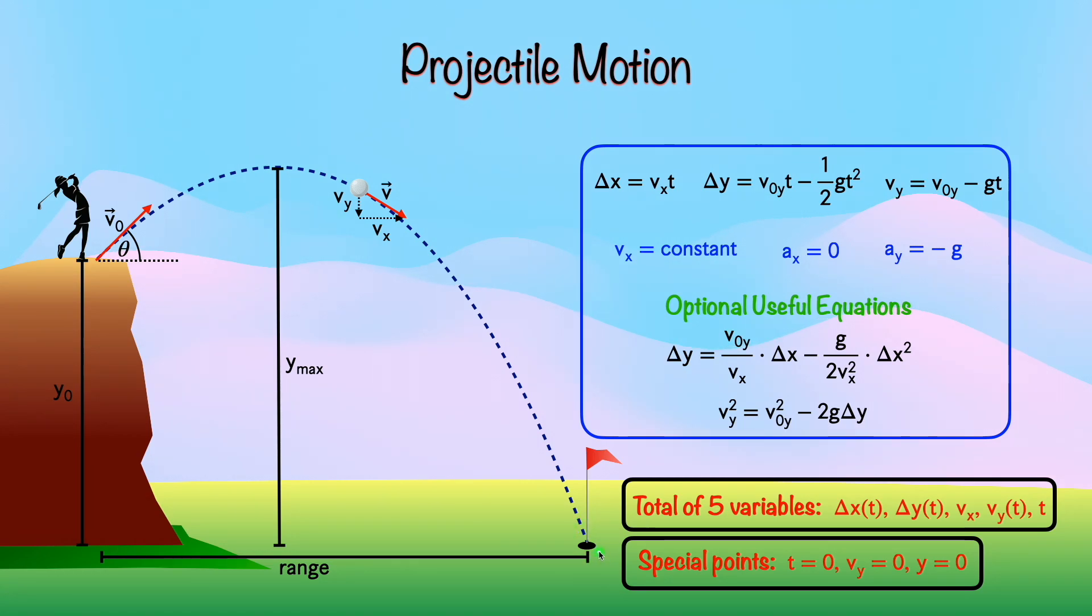Now this won't necessarily be when y equals zero, it'll be y equals zero if you call the ground height zero. Now our projectile motion problem does not have to involve these three points. Since you could in principle get a question regarding any point along the trajectory, but the vast majority of questions will involve these three points. So you should keep that in mind and recognize when you're being asked a question regarding one of these three points.